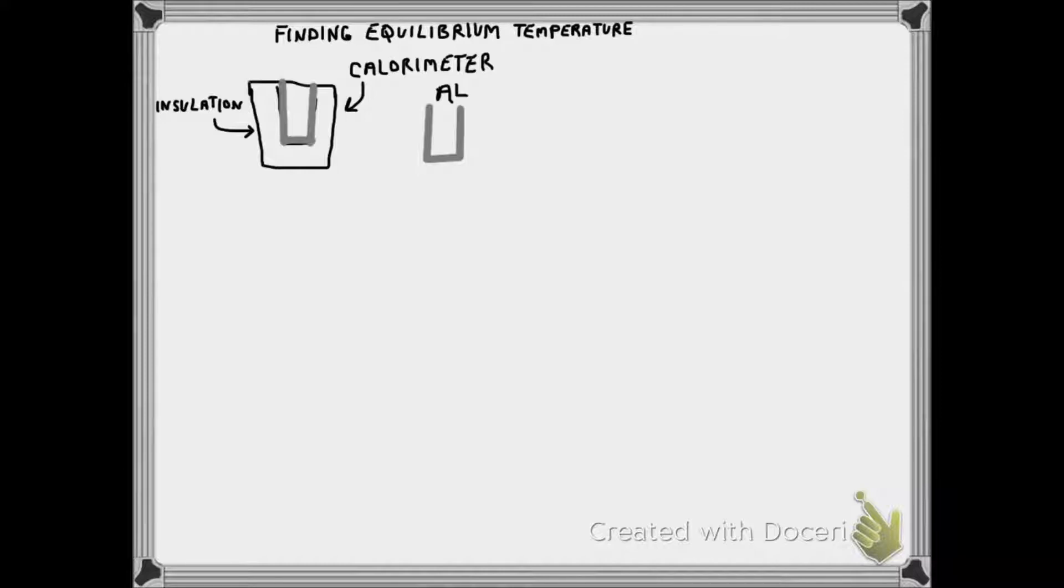It's been insulated from the outside environment and has reached an equilibrium temperature. We have 0.6 kilograms of aluminum at 20 degrees C, and just like in the lab, we're going to add some water.